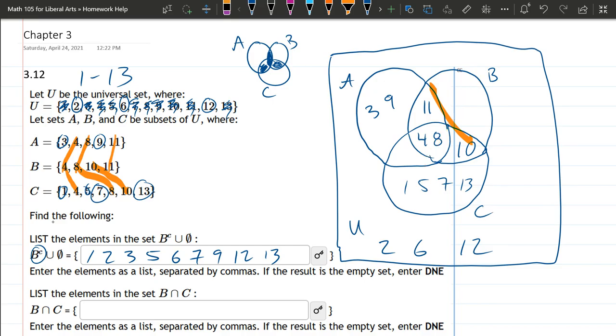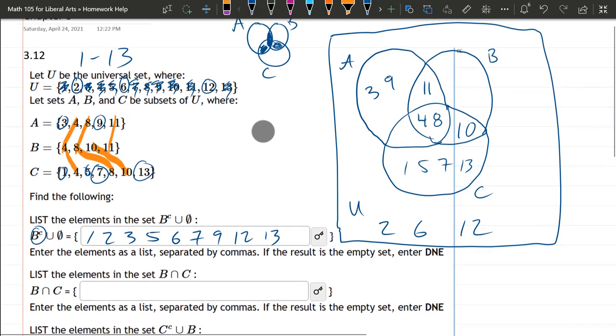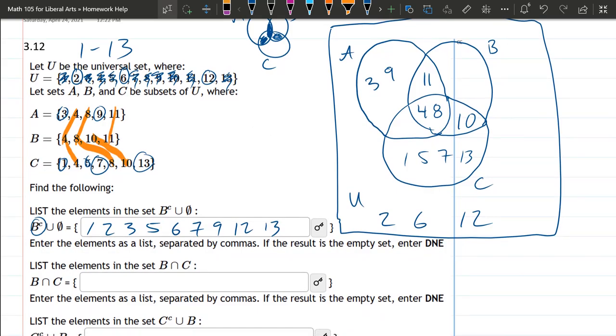Now we can get rid of this. Alright, so now we're going to list the elements in B intersects C. So common to B and C. This actually is pretty fast once you have your Venn diagram. B and C. It's that shape right there. So we have 4, 8, and 10. That's it. You need to be in B and C.